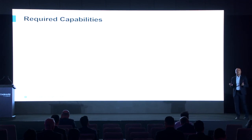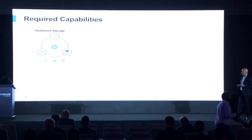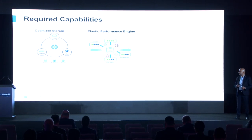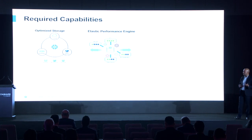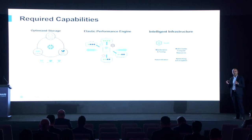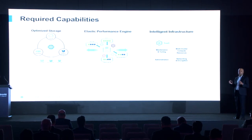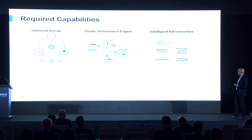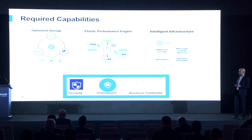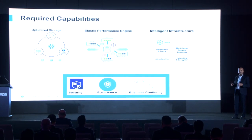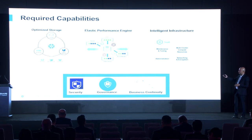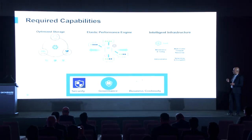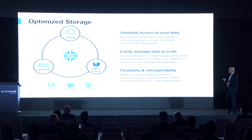So what are the required capabilities for such a platform? First, it needs optimized storage. On top of that storage, it needs an elastic performance engine to run workloads. Then it needs to operate in an automated way — an intelligent infrastructure in a SaaS model that handles all administration for you. All of this needs to rely on a foundation of security, governance, and business continuity. I'll deep dive on each of those items.